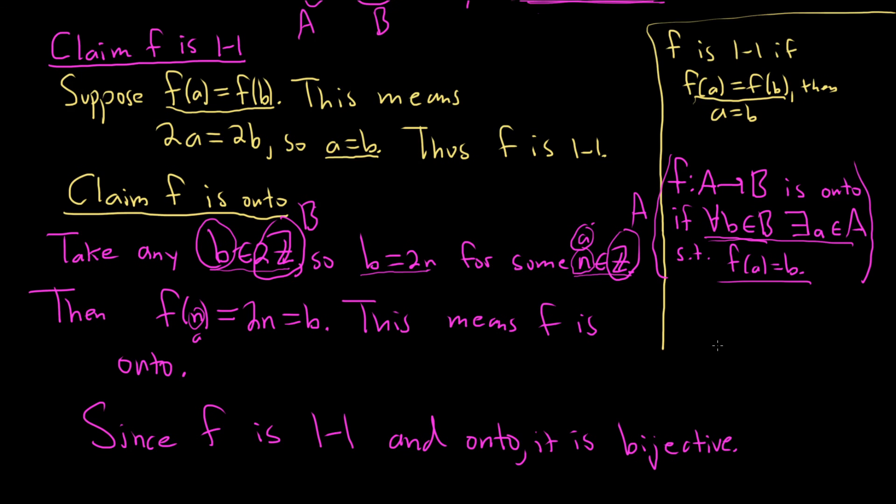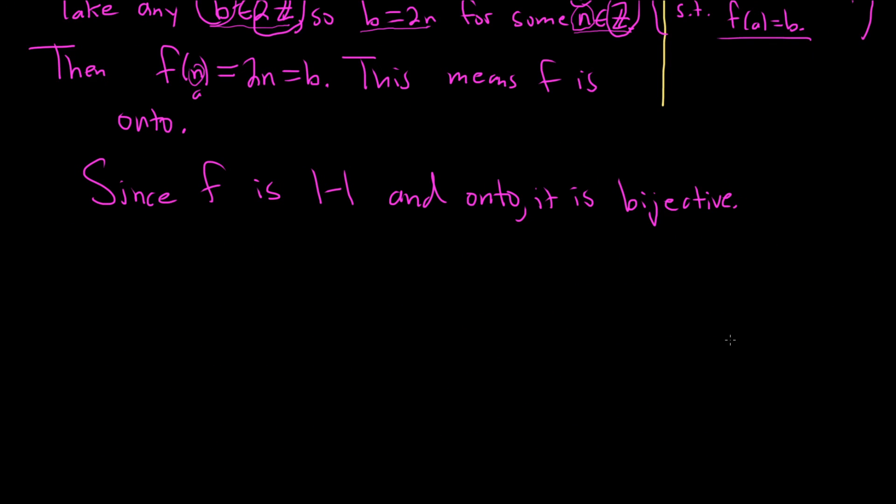So we have a bijection between the set of integers and the set of even integers. That means that they are countably equivalent. In other words, they have the same number of elements. In other words, they have the same cardinality. Thus, the cardinality of Z is equal to the cardinality of 2Z. And that completes the proof. I hope this video has been helpful.